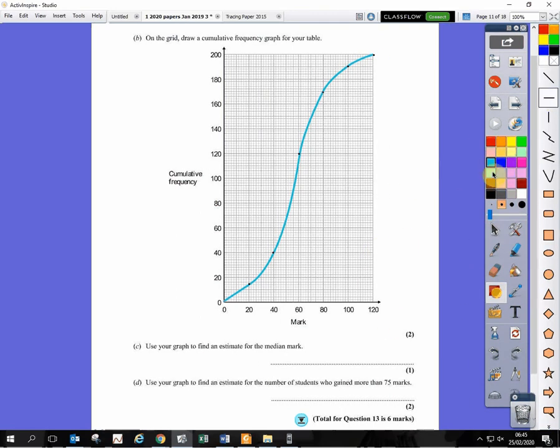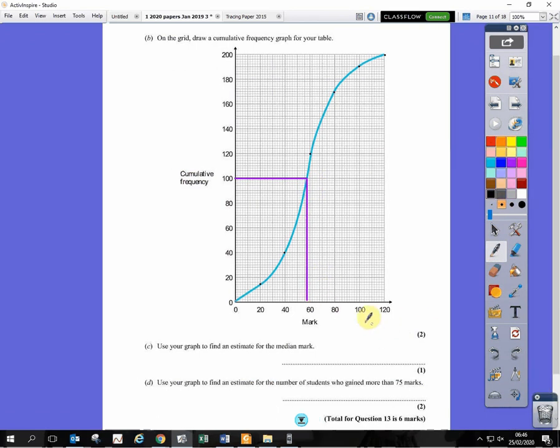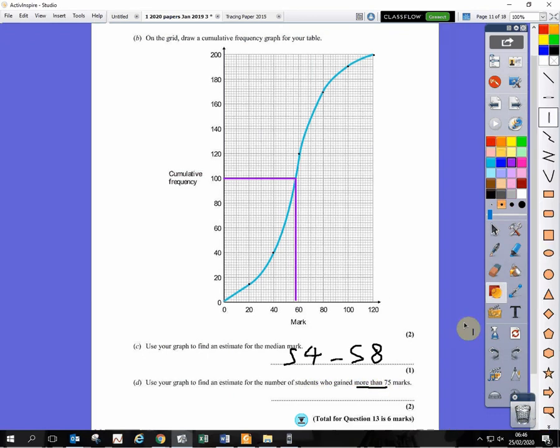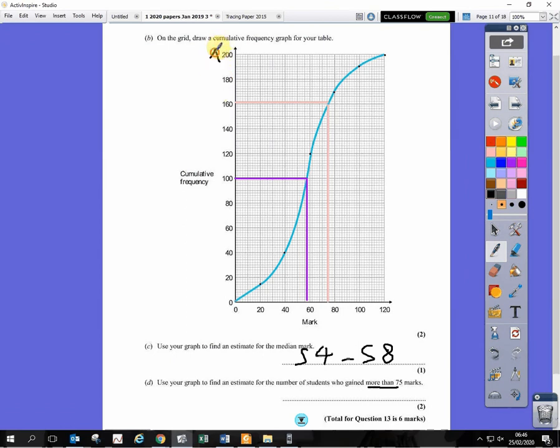That's good. Find an estimate for the median mark. Draw a line across in the halfway. So the maximum frequency is 200. So if we half that, we'll draw a line across at 100. Draw a line down there. Read off the value. The mark scheme accepts 54 to 58 anywhere in that region. Use your graph to find an estimate of the number of students who gain more than 75 marks. Find 75 marks at the bottom. So you've got 60 there, 80 there, 70 is halfway. So 75 is halfway between 70 and 80. Draw a line up and across. And it's the bit above because it says more than 75 marks. The mark scheme accepts any answers between 38 and 44.